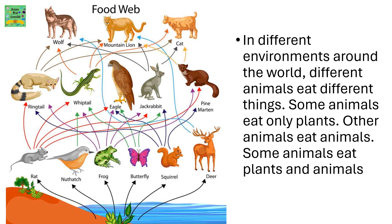In different environments around the world, different animals eat different things. Some animals eat only plants. Other animals eat animals. Some animals eat both plants and animals.